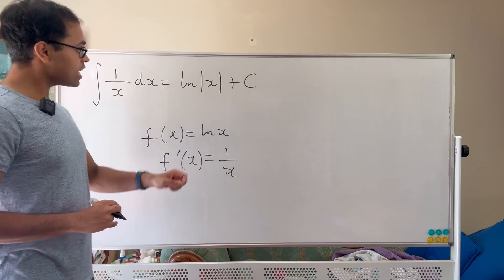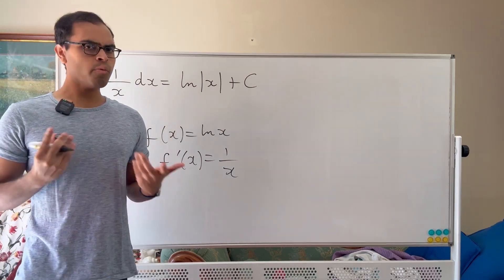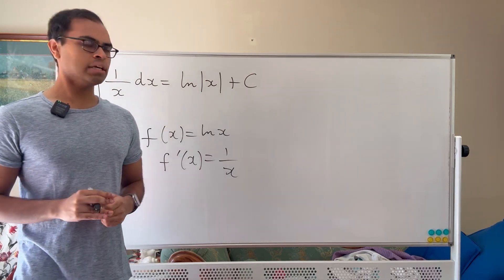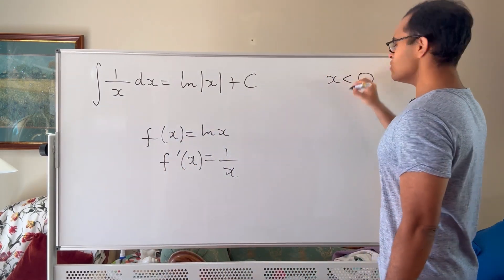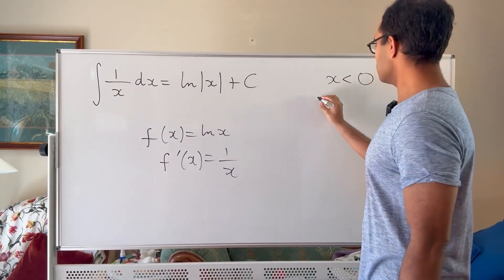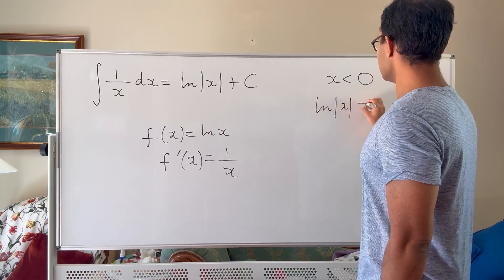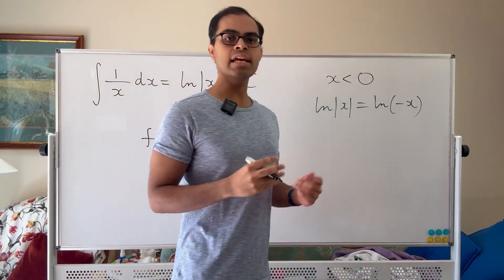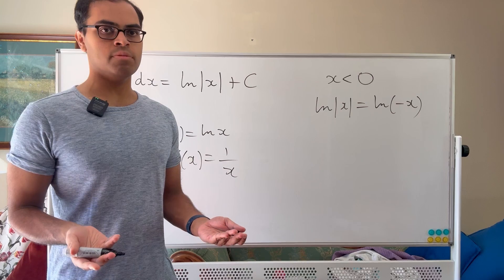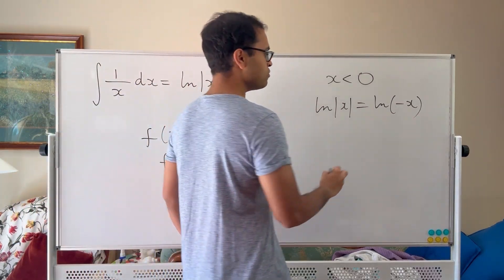So that's why we put the absolute value. But why does that work? What does that do really? Well let's find out. If x is negative, then when you take log of the absolute value of x, you know that is just log of minus x, which makes sense because x is negative so minus x is positive, hence in the domain of log.